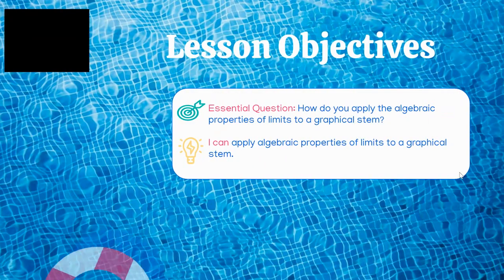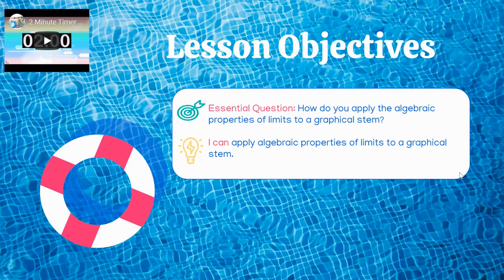Our lesson objectives for the day: the essential question is how do you apply the algebraic properties of a limit to a graphical stem? What the stem means — and I'll point it out when we get to a question — is how does the question start. That's the question stem. We're going to talk a lot about that because we have three or four different stems we tend to work with throughout calculus. The objective is that I can apply algebraic properties of limits to a graphical stem.